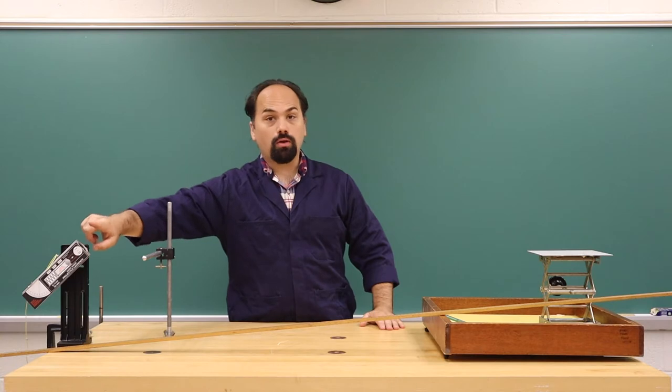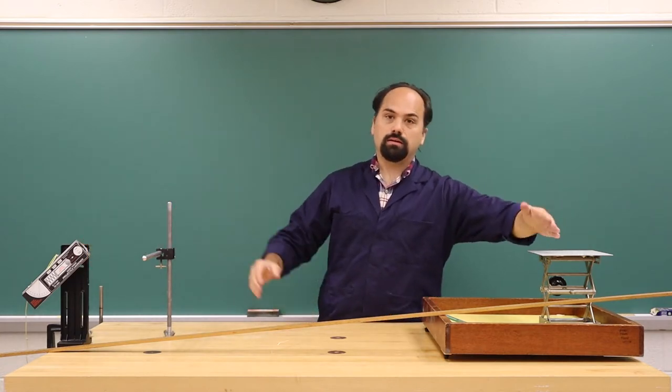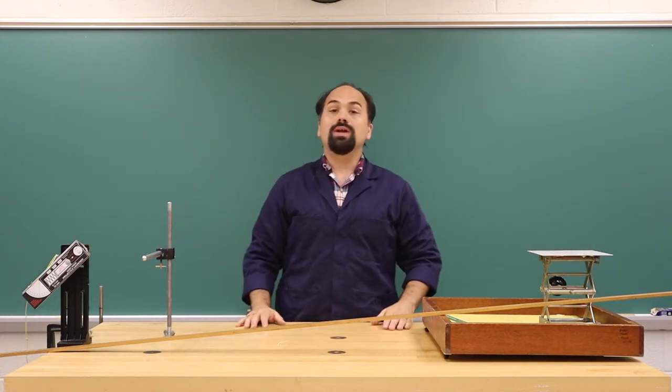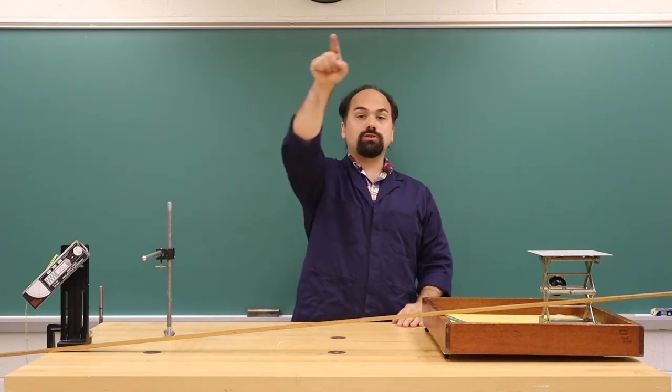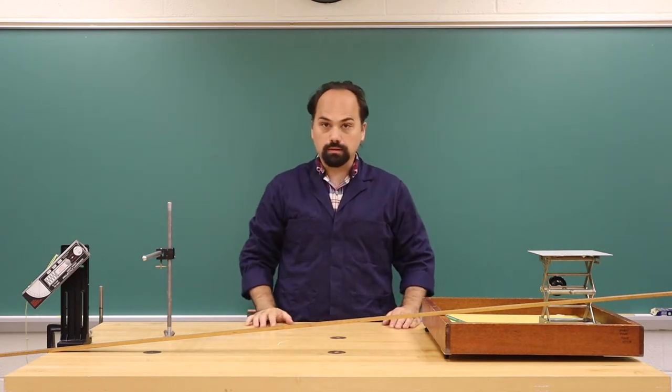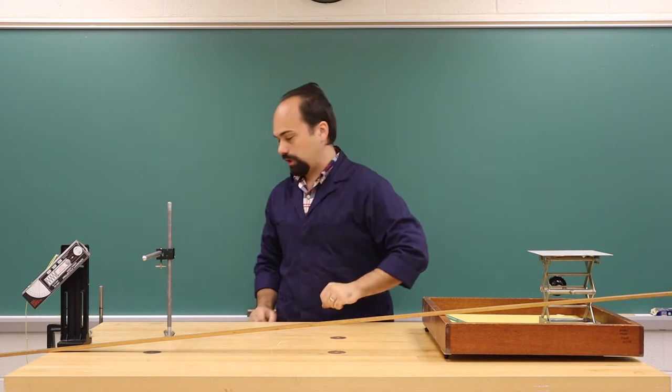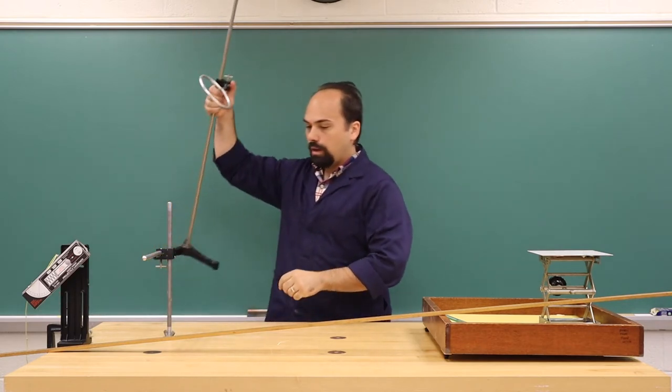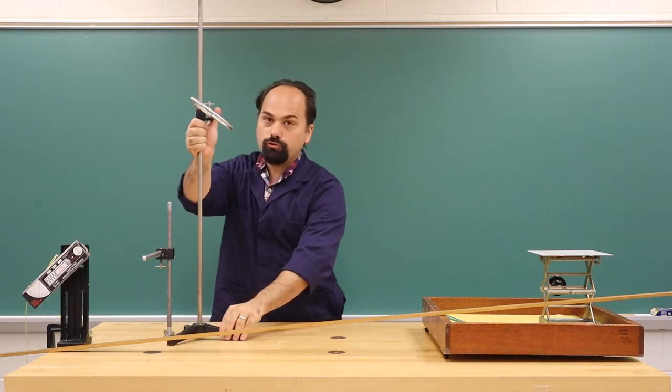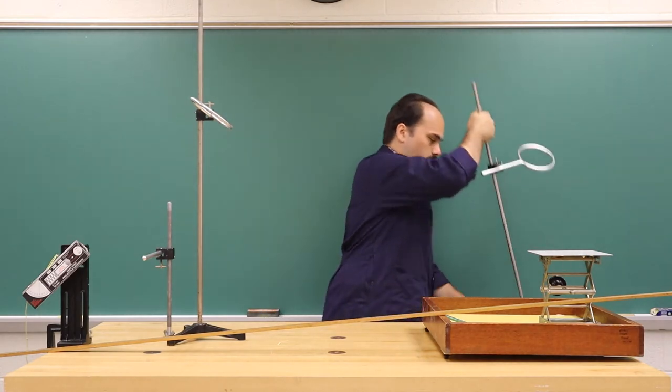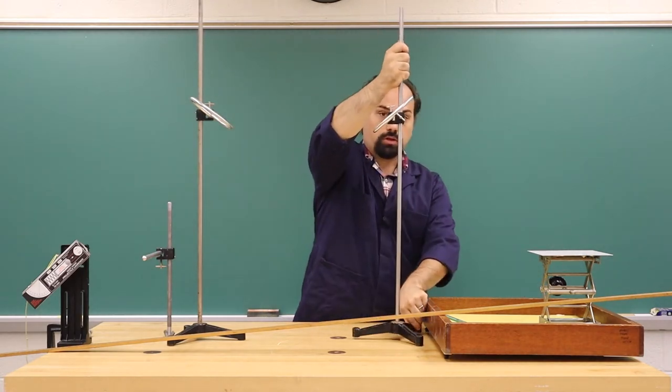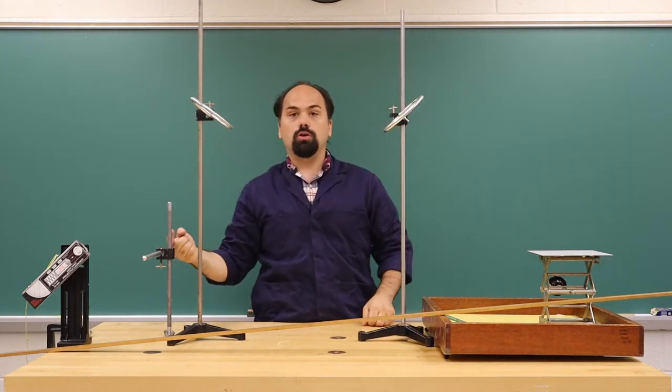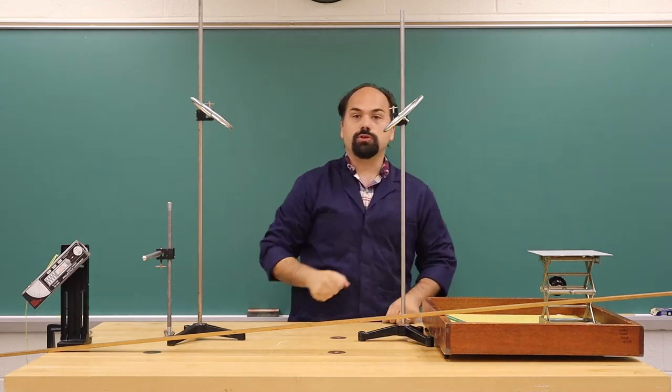Knowing the muzzle velocity and the range, we can calculate the trajectory the ball must take and we can test that trajectory by placing two rings such that a launched ball will travel through the two rings.